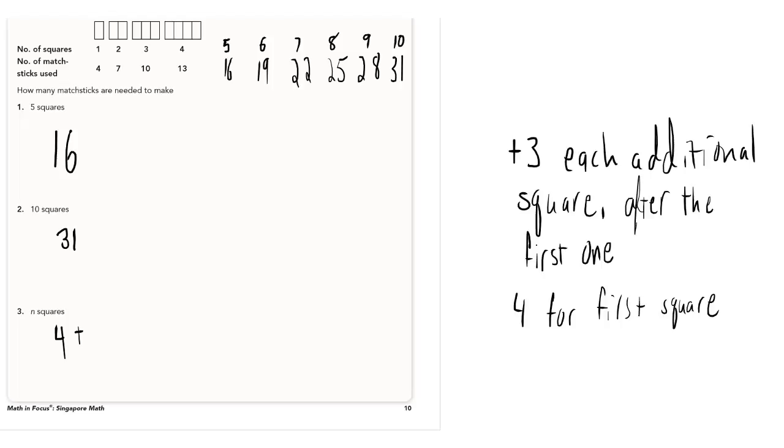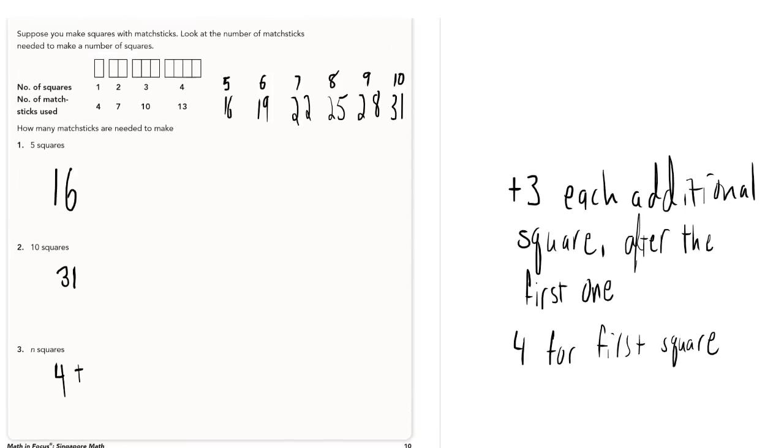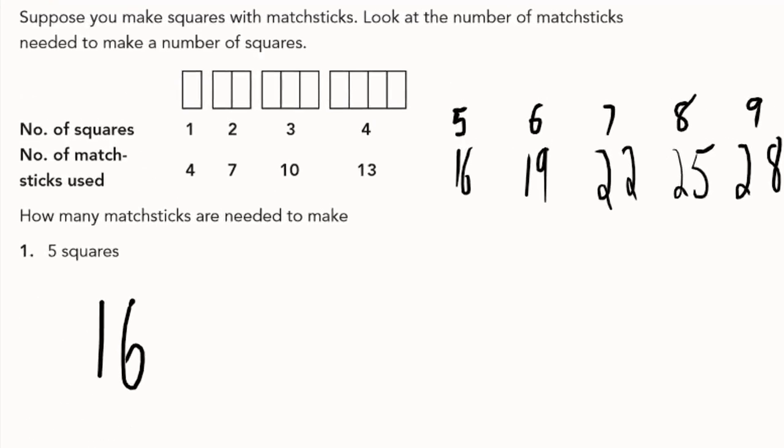So, in our expression, four will remain constant. We'll always be adding some four plus. Now we need to figure out what we add each time. And remember, n for us will represent the number of squares. So back up to the diagram above and consider. Well, when n is two, we're adding three to four.